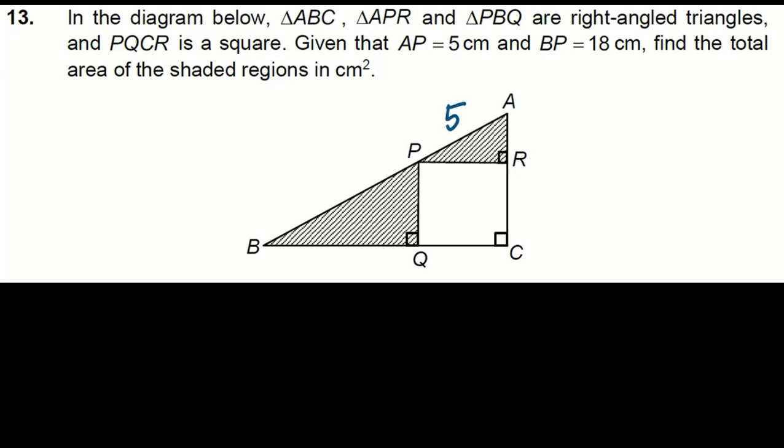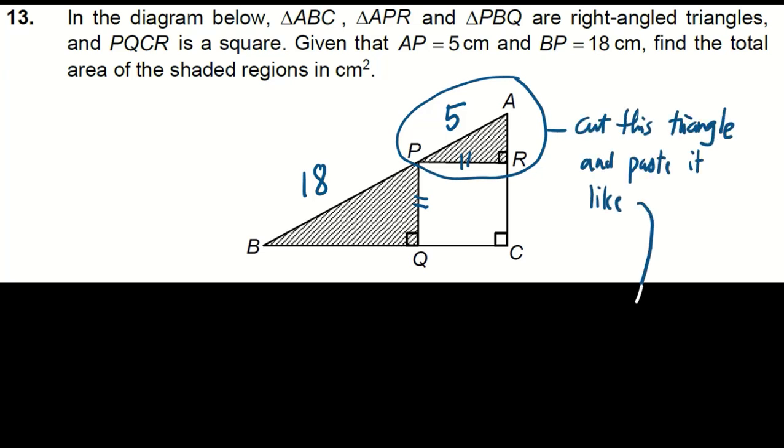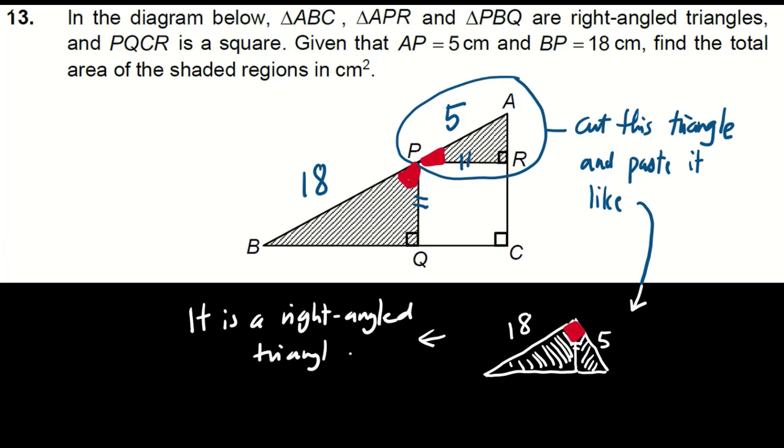First, write down the information. Now cut this rectangle and paste it as shown. We will get a new triangle. Note that this new triangle is a right angle triangle with a base of 18 and a height of 5. Therefore, the area is 45. This question is rather straightforward if we know the method.